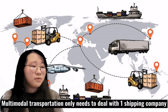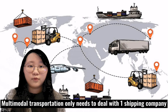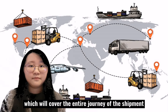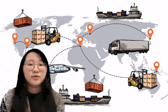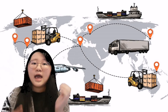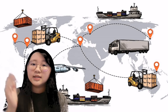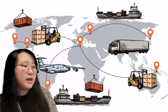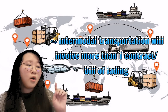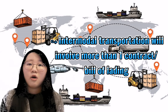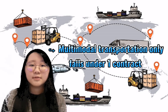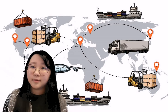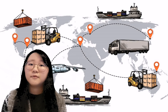On the other hand, multimodal transportation only needs to deal with one shipping company, which will cover the entire journey of the shipment. Thus, the main difference between intermodal transportation and multimodal transportation is the number of contracts involved. Intermodal transportation will involve more than one contract or bill of lading, while multimodal transportation only falls under one contract, even though both transportation types involve different modes of transportation.